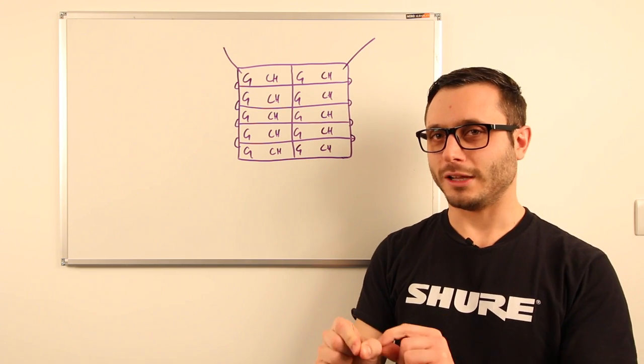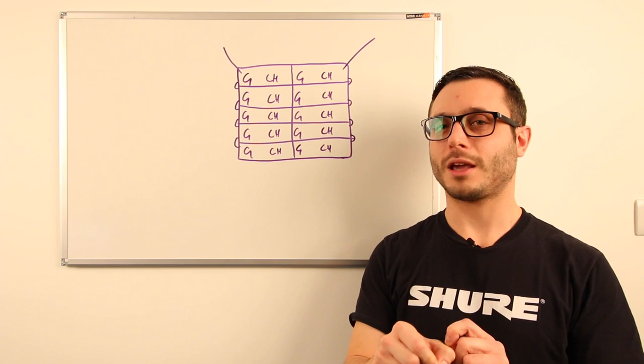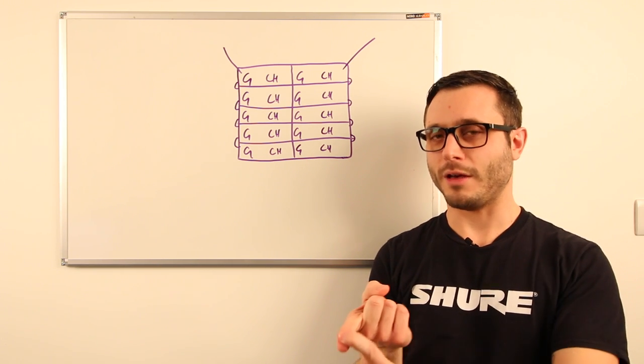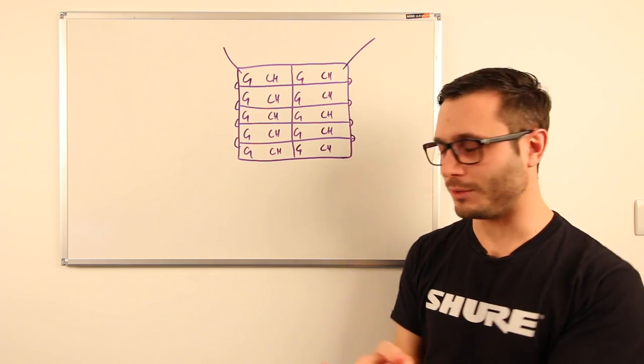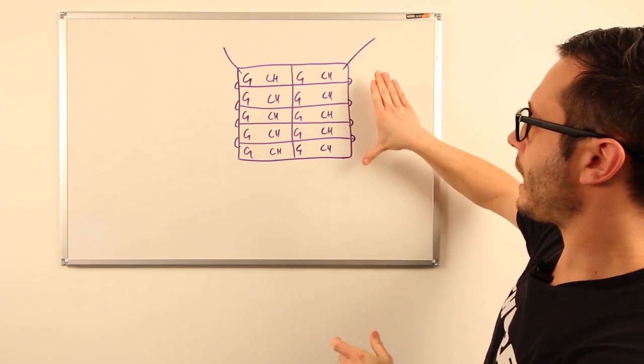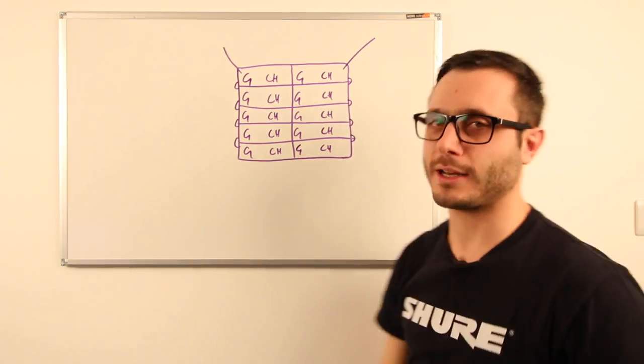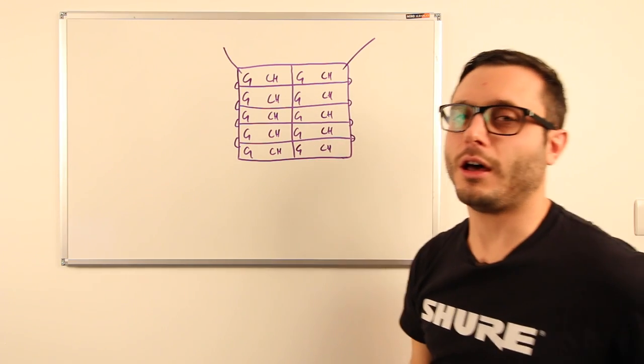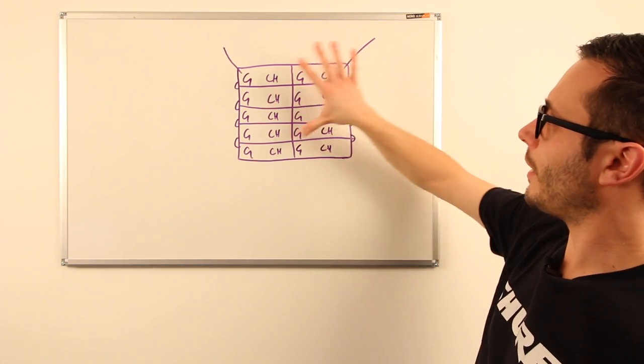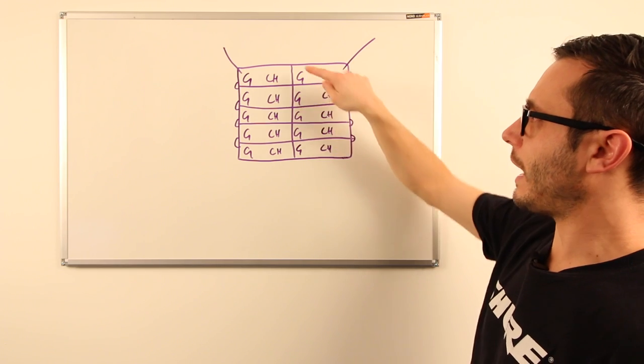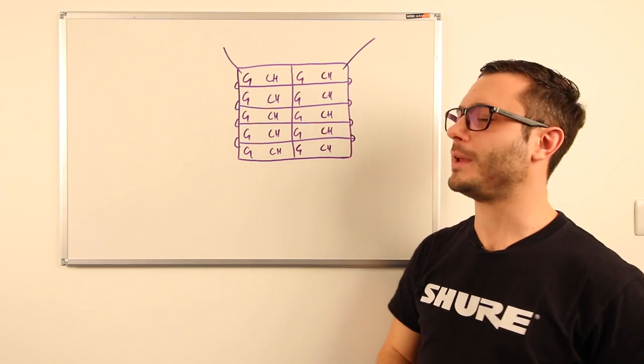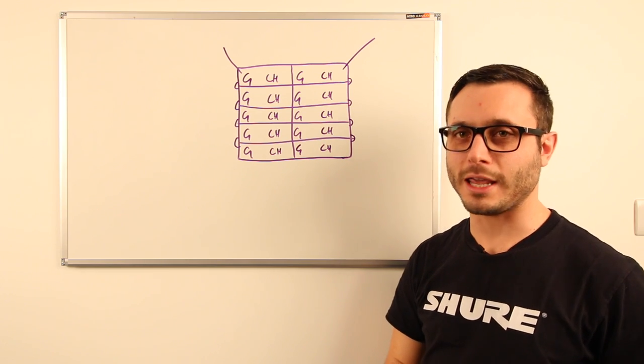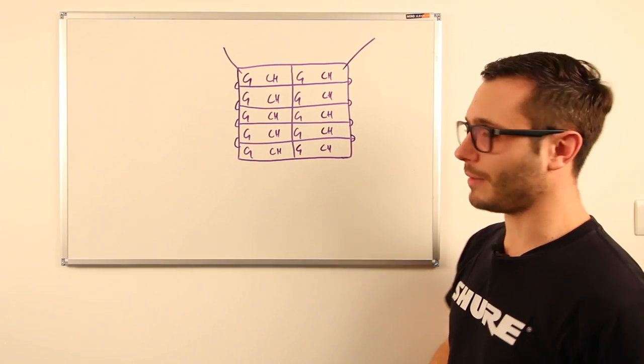So we arrange all of our groups or all of our frequencies into predetermined groups and channels. Now all of the channels within a given group are known to be compatible with each other, observing the minimum frequency separation and avoiding intermodulation distortion. So if I was to go take this radio rack to the Kalahari Desert, I know that I could tune all my receivers into group 1 and onto different channels within that group. I'd turn on the rack and be guaranteed absolutely no frequency issues whatsoever.